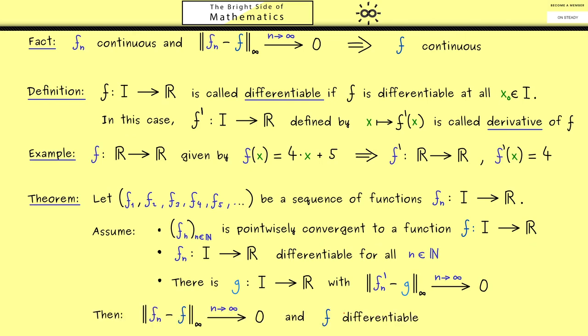However more importantly we also have that the limit function f is differentiable as well. And when we calculate the derivative we get out the function g. So you see this is the whole theorem and it is very nice because it tells us that under these conditions here differentiability is conserved. Therefore I would say let's use the next minutes to prove this theorem.